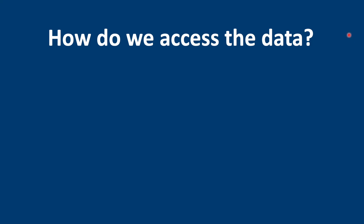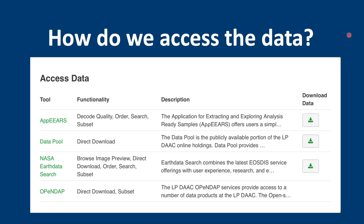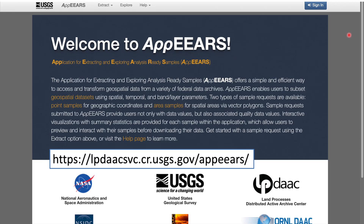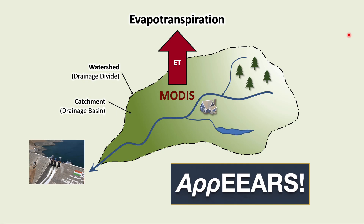There are several platforms which we can use to access the evapotranspiration data. The first one, APPEARS, is really easy to use. Here's the APPEARS website. I'll leave a link in the description below. In the next video, I'll show you how to download MODIS evapotranspiration data over a catchment using APPEARS.